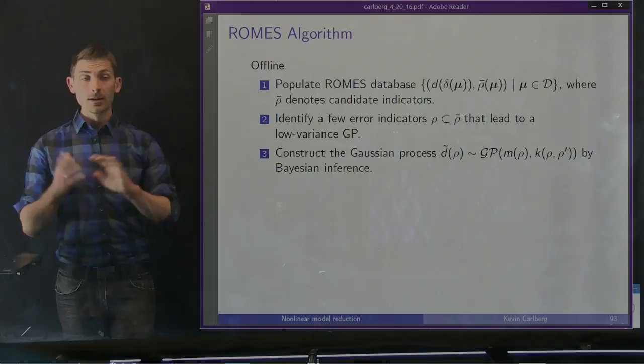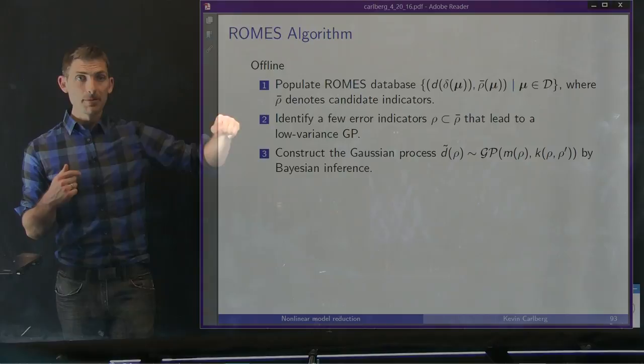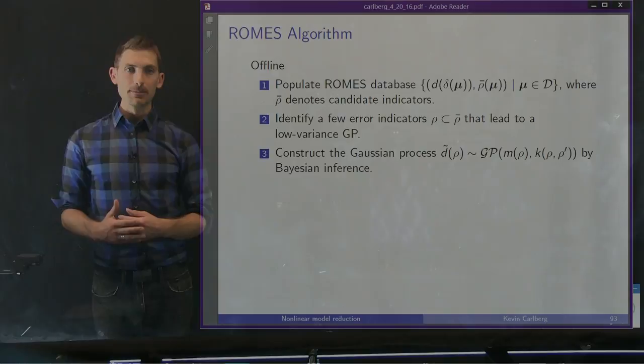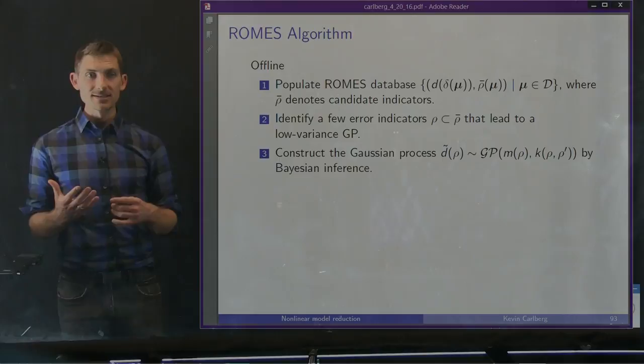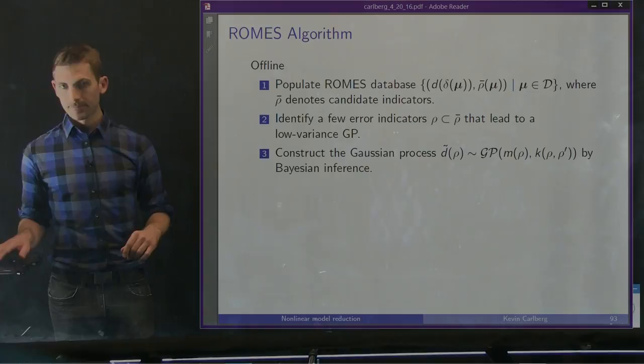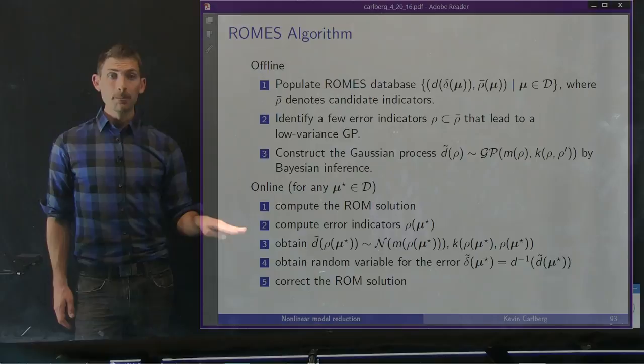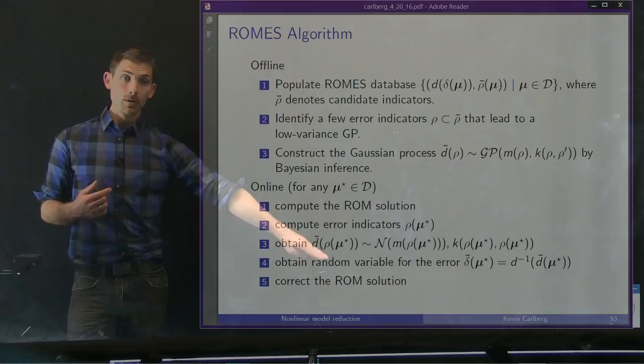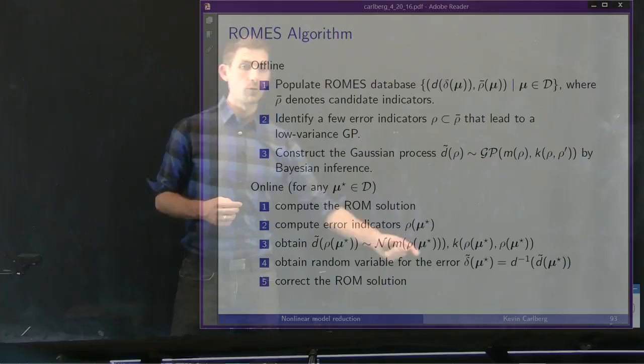During the offline stage, we populate the ROMS database with transformed errors and candidate error indicators, identify a few indicators leading to low-variance Gaussian processes — we're working on automating this — and construct a Gaussian process via Bayesian inference. During the online stage, for any point in parameter space, we solve the ROM, compute the error indicators that come for free, obtain a distribution over the ROM error, and apply the inverse transformation function. Because we have a random variable for the ROM error, we can apply it as a correction to the ROM solution.